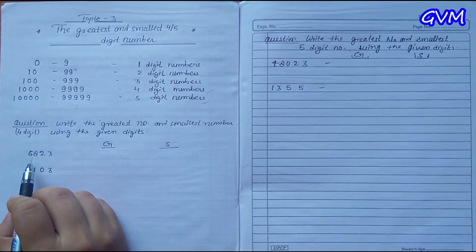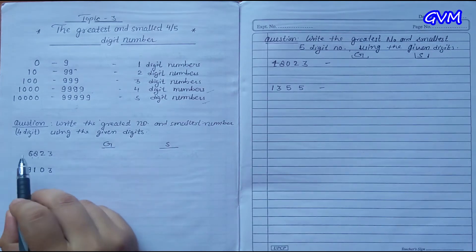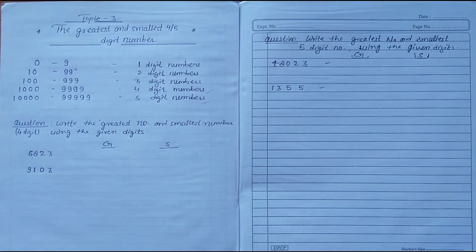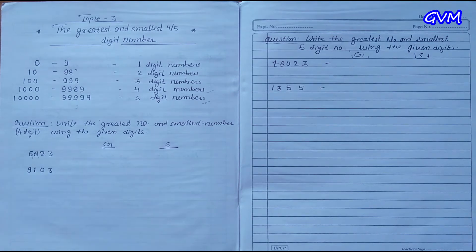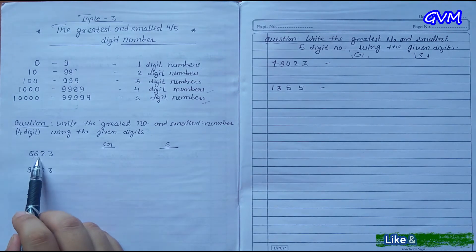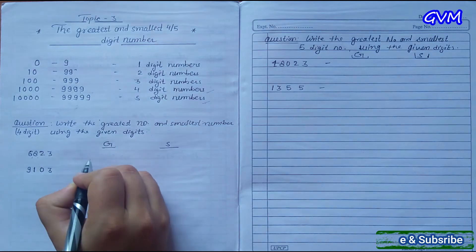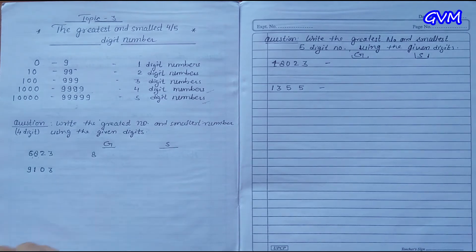We have the digits 6, 8, 2, and 3, and we have to generate the greatest and smallest number from them. For the greatest number, we have to put the numbers in descending order — that means from biggest to smallest. The biggest number will come on the left-hand side first.